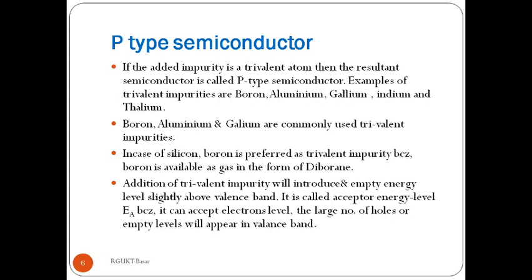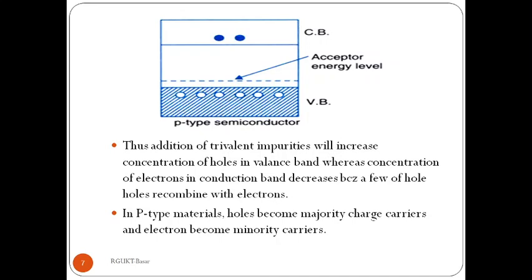Addition of trivalent impurities will introduce an empty energy level slightly above the valence band, called the acceptor energy level, because it can accept electrons from the valence band. When electrons move into the acceptor level, a large number of holes or empty levels will appear in the valence band. In the energy band diagram of a P-type semiconductor, when we dope 3rd group elements into the pure semiconductor, the acceptor energy level is added above the valence band.